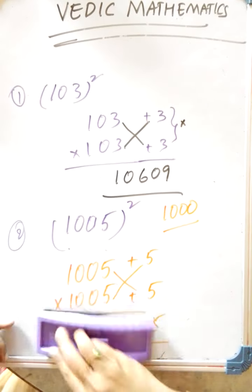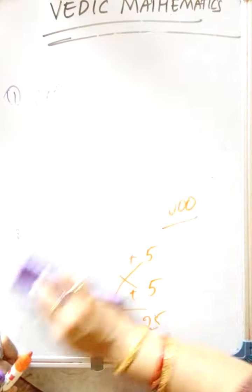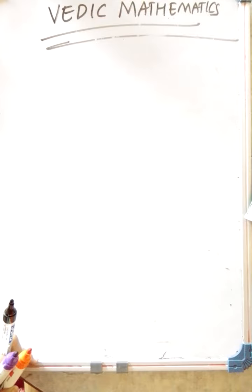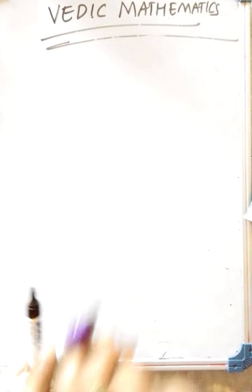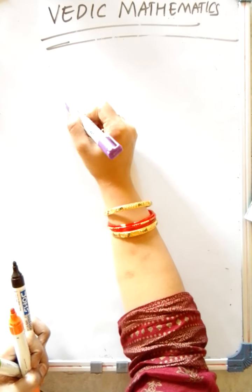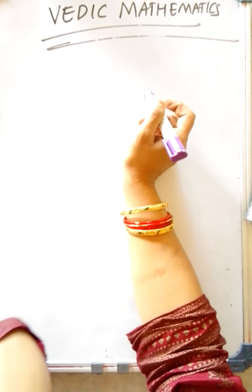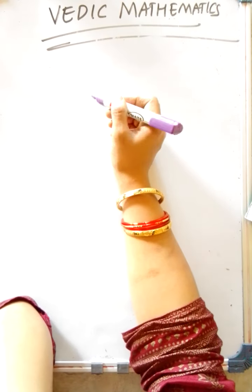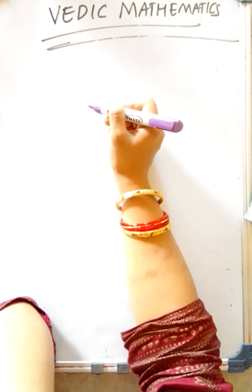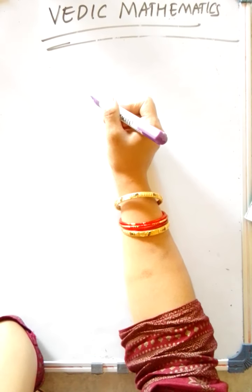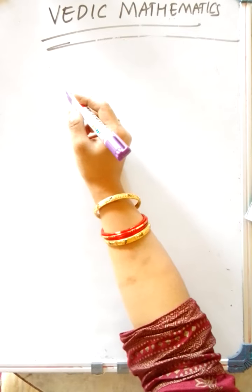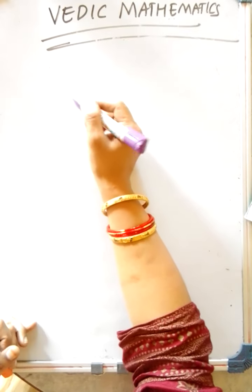This is also another way of finding a square. If you want to multiply a huge number with a huge number, it takes so much time. So Vedic Mathematics helps us to solve our problems within less time. I am performing all these operations within less time.